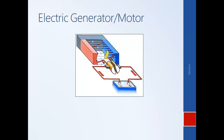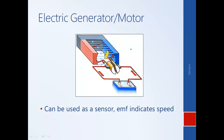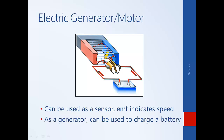Another component that can be used as a sensor is an electric generator. It has the same structure as a motor, but works in the opposite way: motion generates a current output. This generator can be used as a sensor because the EMF it generates indicates the speed of the generator. It's also worth noting that a generator can be used to charge a battery — if you want to brake the vehicle, you can use the vehicle to turn the generator, thereby slowing the vehicle down and generating electricity — regenerative braking.